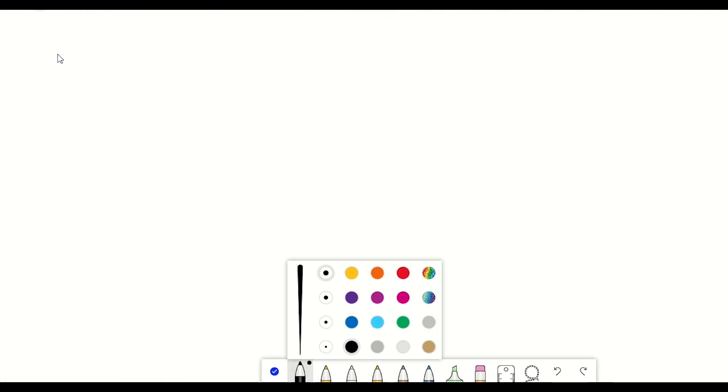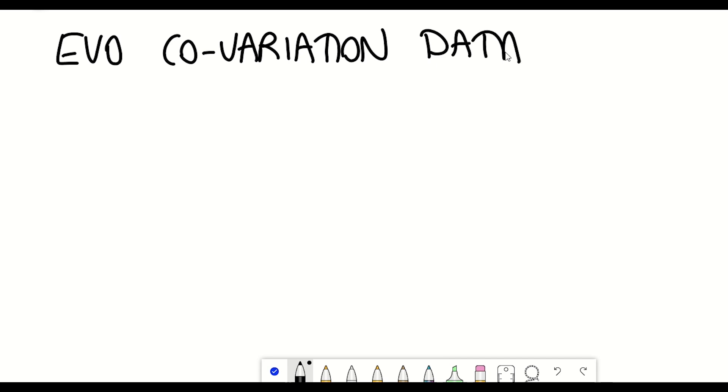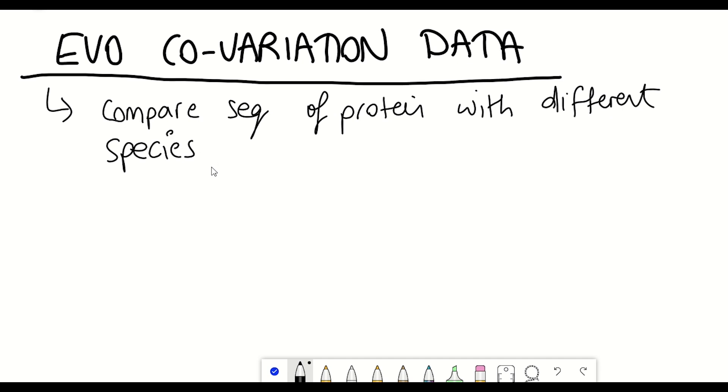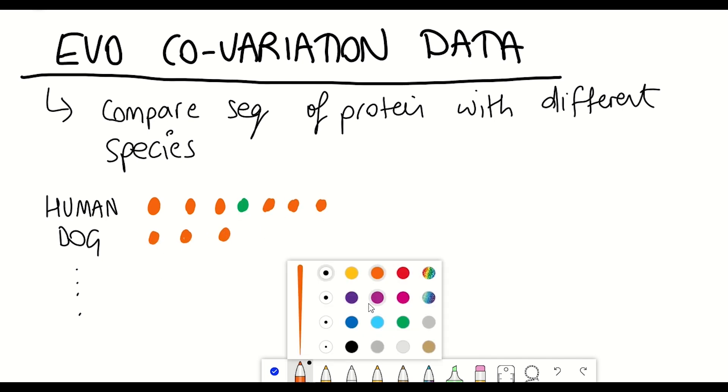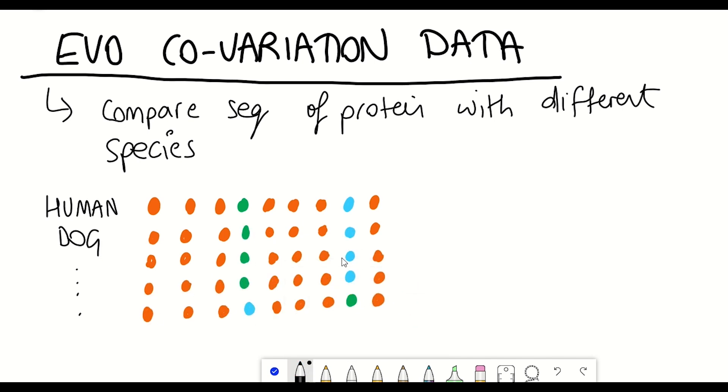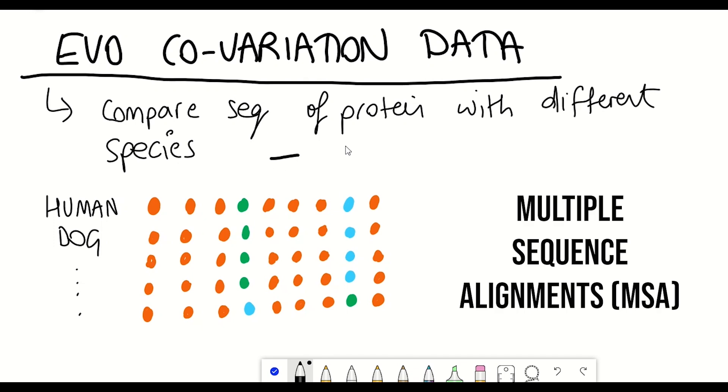And one really valuable bit of information comes from the use of evolutionary co-variation data. Now that may sound complicated, but we'll get to it. Basically, this approach uses the power of comparing the protein sequence to the same protein sequence found in different organisms. For example, mice, rats, snakes, dogs, cats, whales, you get my point. And you take the same sequences from these different organisms and you form multiple sequence alignments. You see which amino acids are the same or different in the different species.